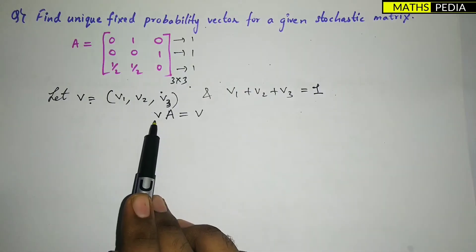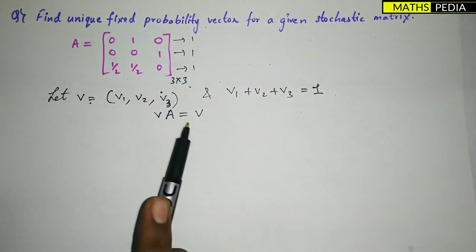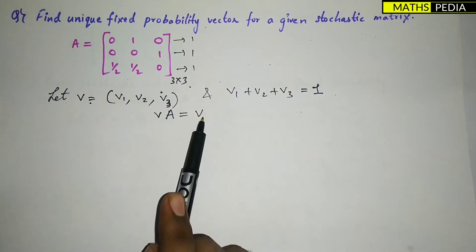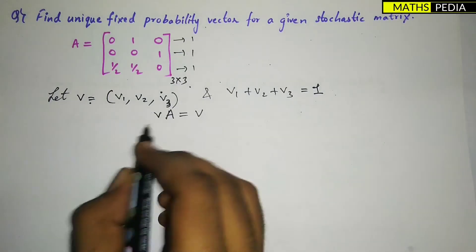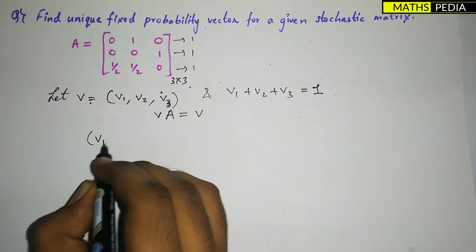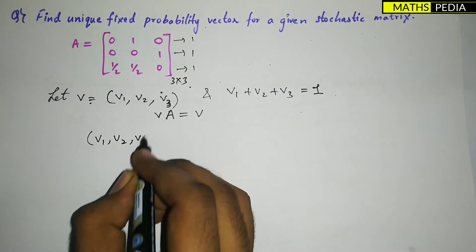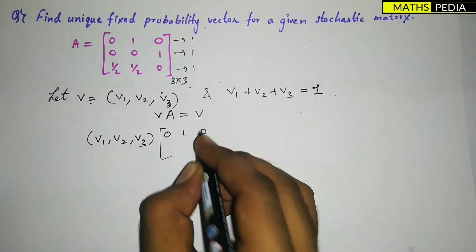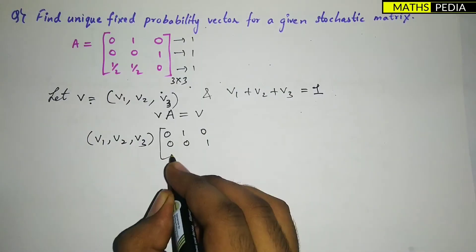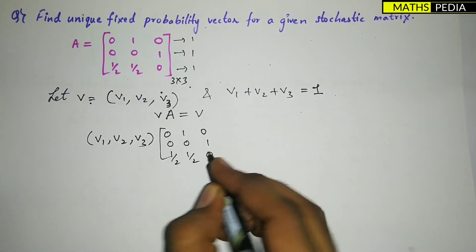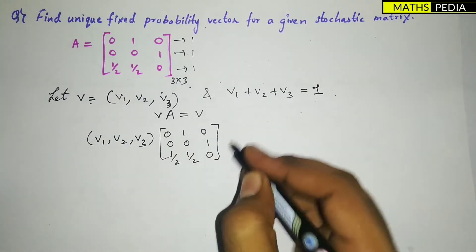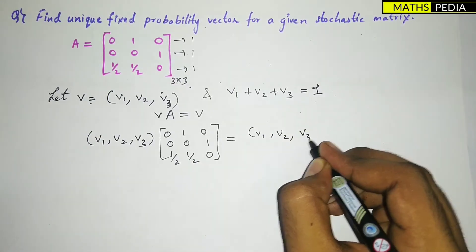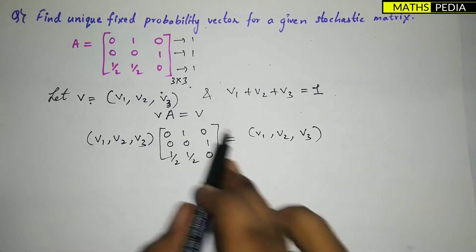We have the relation v·A = v, where v is the unique fixed probability vector and A is the given matrix. So we substitute: (v1, v2, v3) multiplied by the matrix [0, 1, 0; 0, 0, 1; 1/2, 1/2, 0] equals (v1, v2, v3).